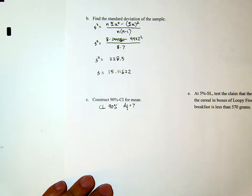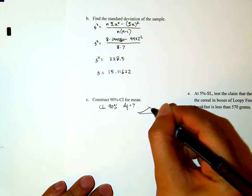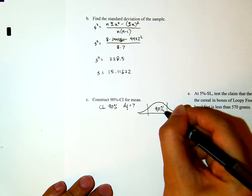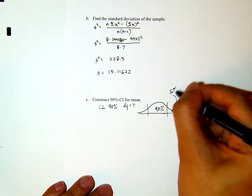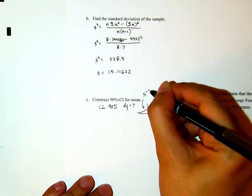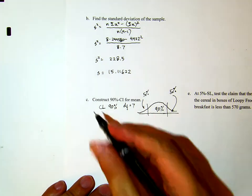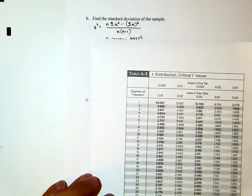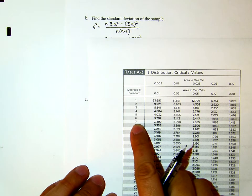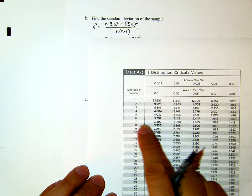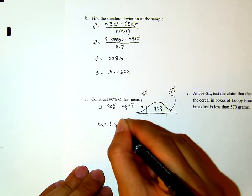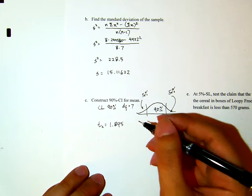For a 90% confidence interval, the area in the tails will be 10% total. With degrees of freedom 7 and area in two tails of 10%, the t-critical value is 1.895.